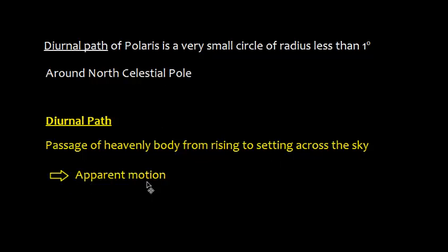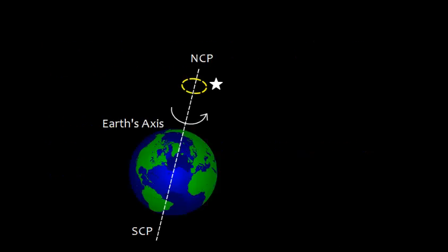Basically, this is the apparent motion. As earth rotates west to east, the pole star will appear to be rotating east to west in a circle which is less than 1 degree radius.